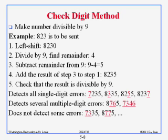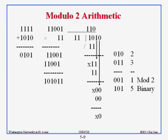You divide by 9, subtract the remainder from 9, and add it as the last digit — making the number divisible by 9. We chose 9 as an example because you can quickly check divisibility by adding the digits: 8+2+3+5 = 18, which is divisible by 9. In practice you can divide by other numbers like 11 or 19 as well.